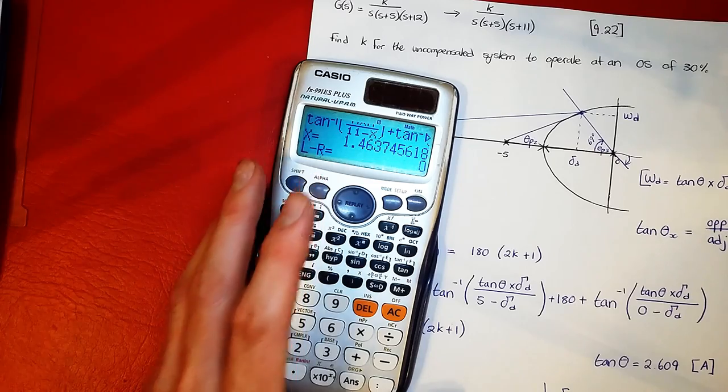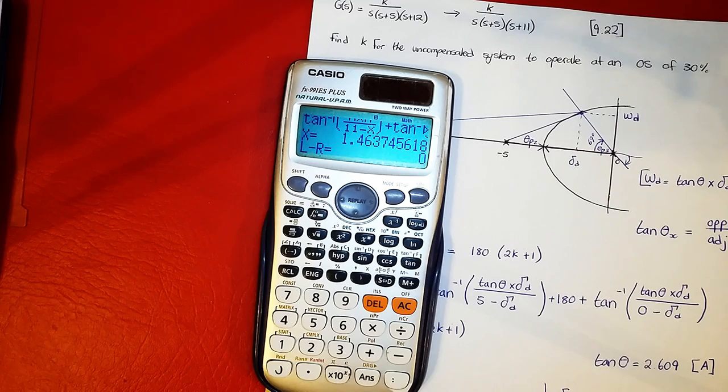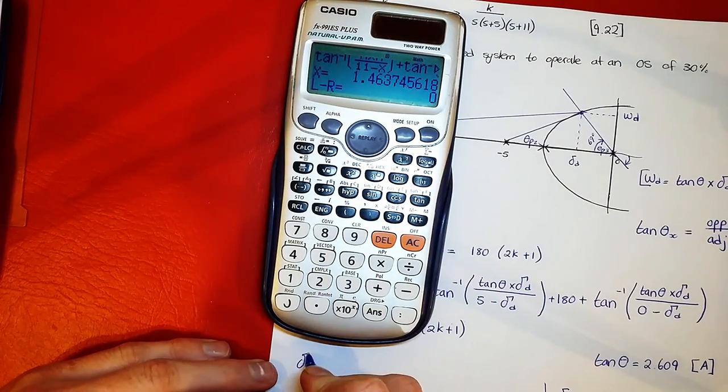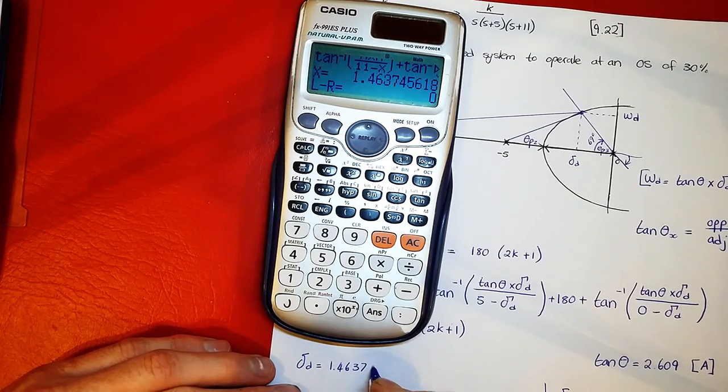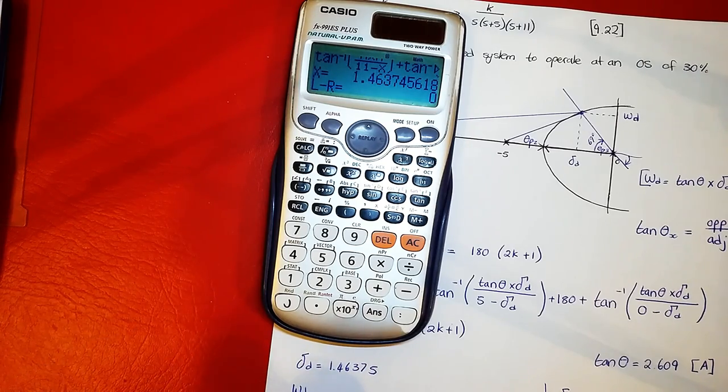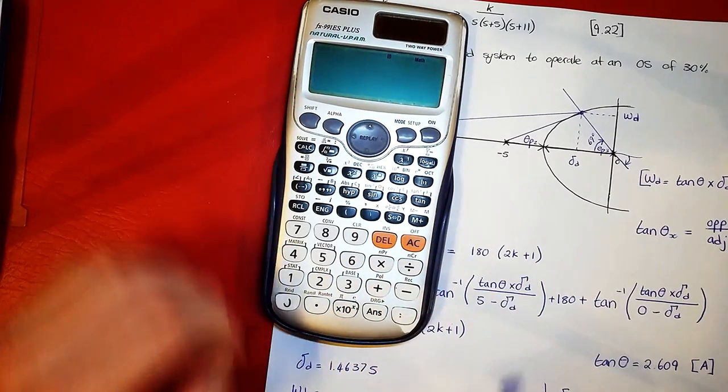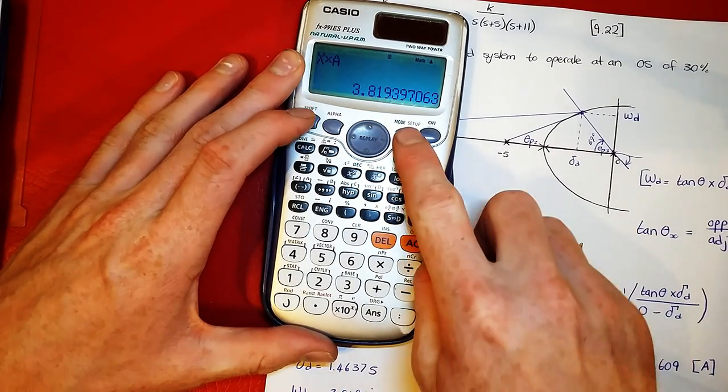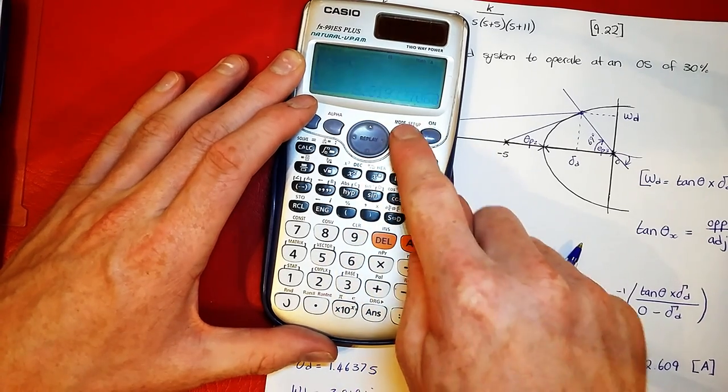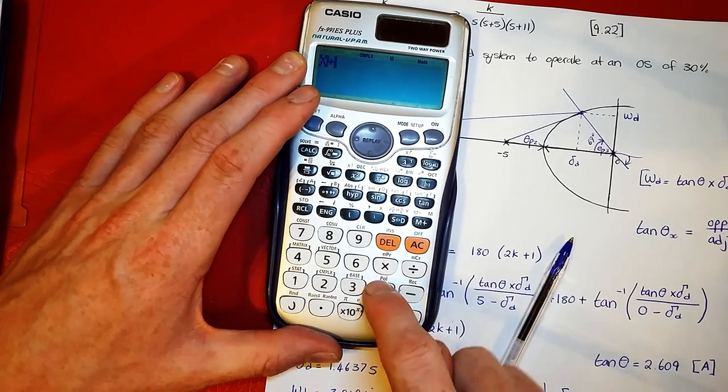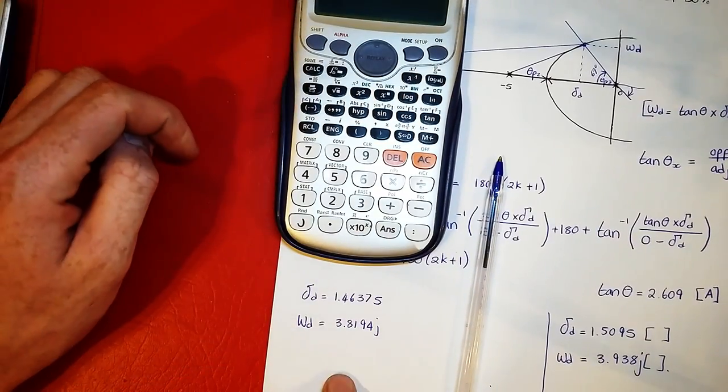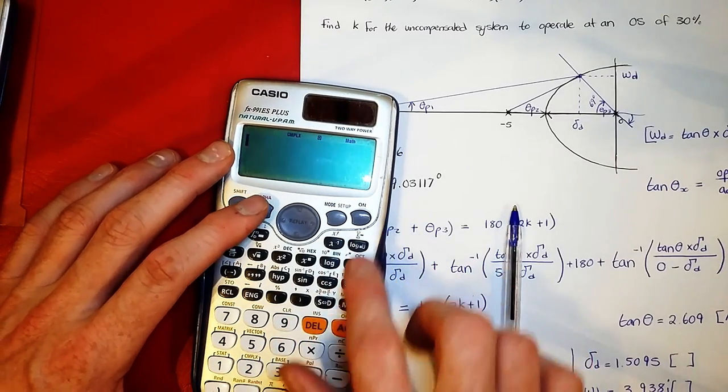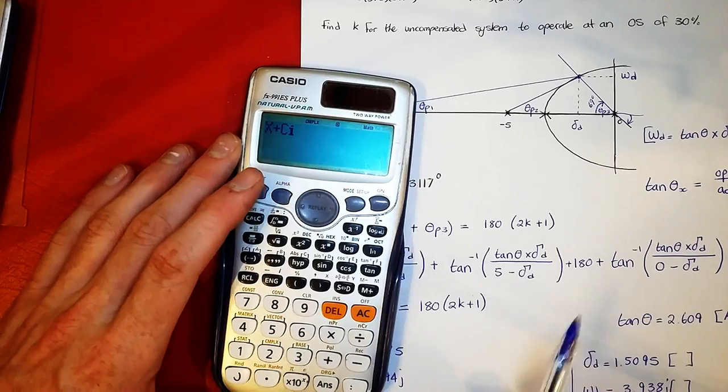So sigma d is equal to 1.4637, so omega d is equal to this point, alpha x multiplied by alpha a, which is 3.8194. Let's store this value, shift store this as c.